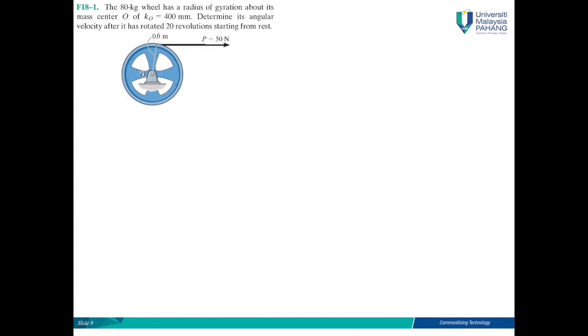Therefore the radius of gyration is given. We want to determine what is the angular velocity after it has rotated 20 revolutions starting from rest. These are all the keywords I've explained in the previous videos.